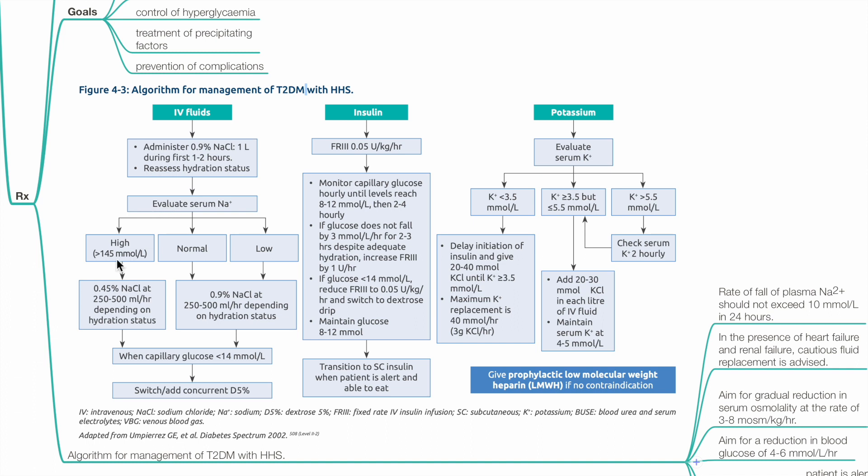If high, more than 145, change to half saline at 250-500 ml per hour depending on hydration status. If serum sodium is normal or low, use normal saline at 250-500 ml per hour depending on hydration status. When capillary glucose is less than 14 mmol per liter, switch or add concurrent dextrose 5%.